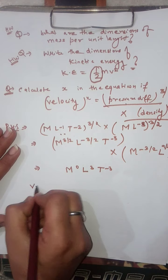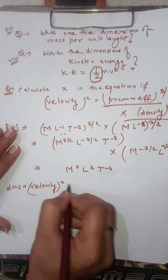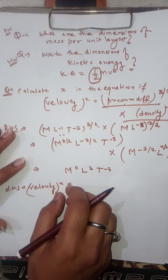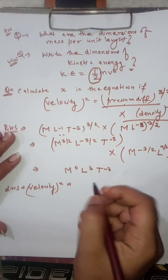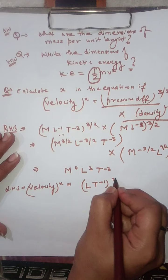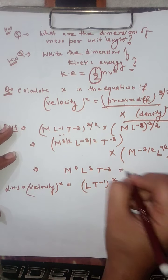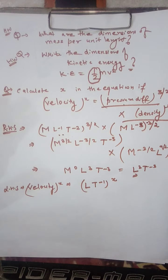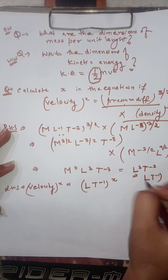Now what is the left hand side? It is velocity raised to the power x. The dimensional formula of velocity is L T⁻¹, raised to the power x. We can also write the right hand side result M⁰ L³ T⁻³ as (L T⁻¹) raised to the power 3.